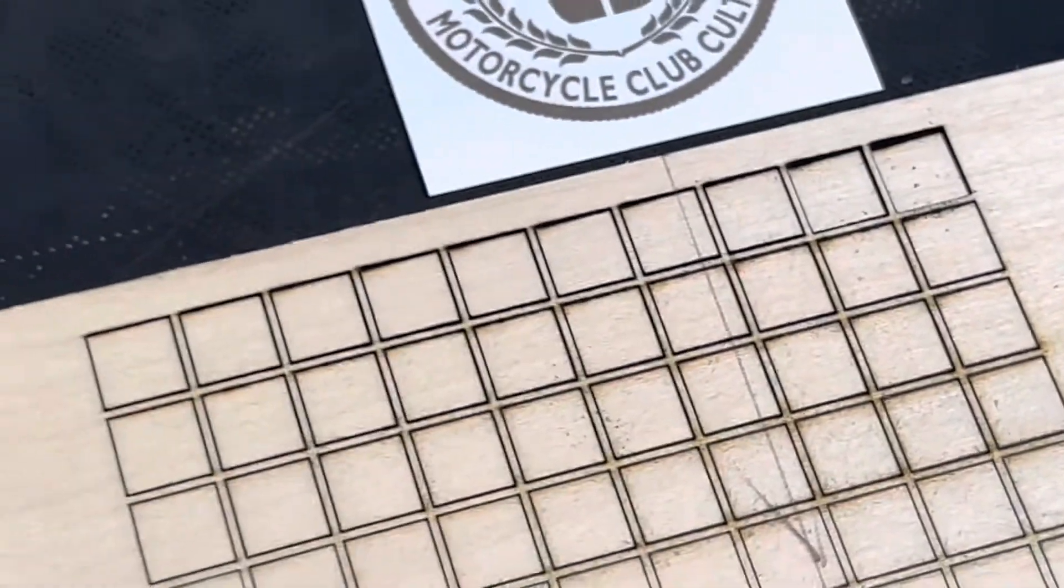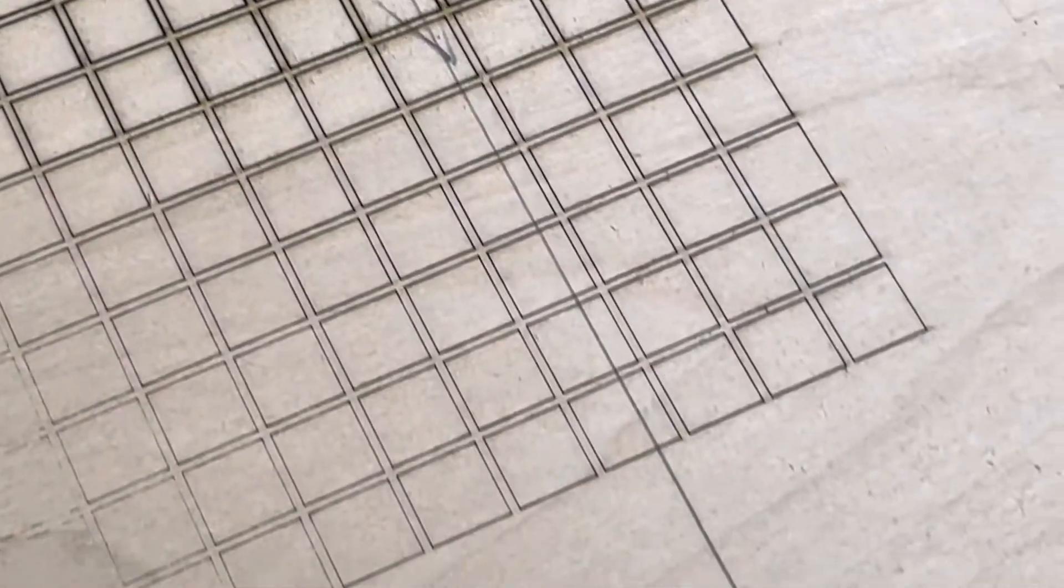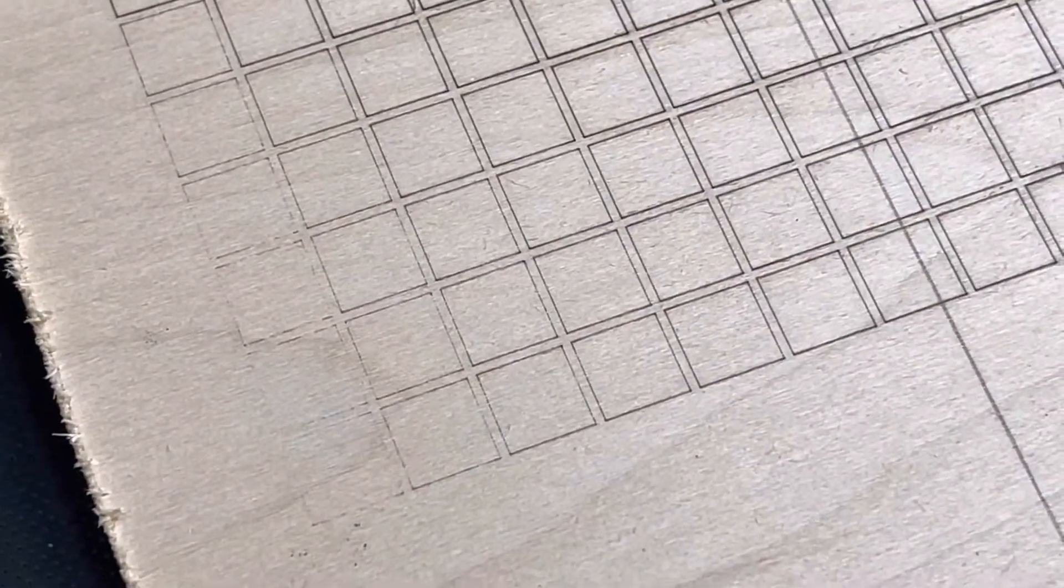So with my Air Assist you get these kind of results. That one line there, that's a pencil line from where I was going to cut this board before. But look even down into the lesser powers you still get really crisp line work. And you can see there's a big difference here without the Air Assist. Even that little bit of smoke can really change what's happening.